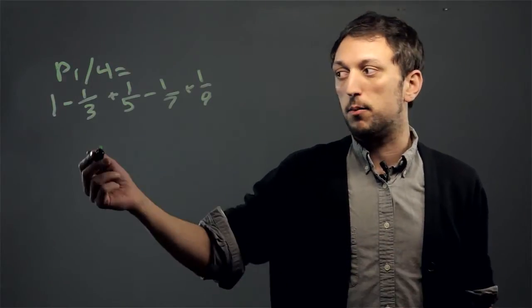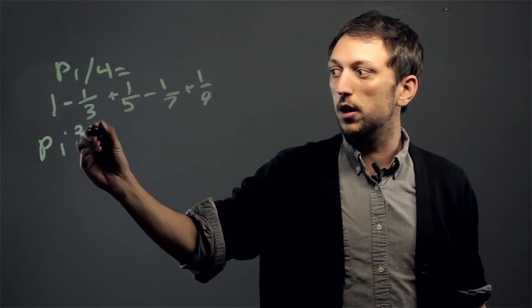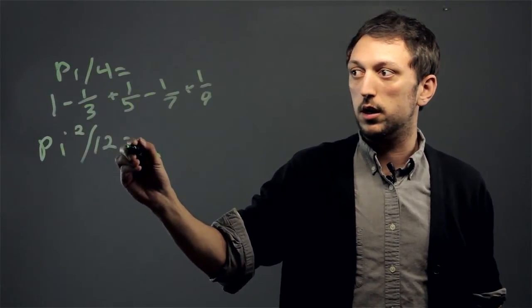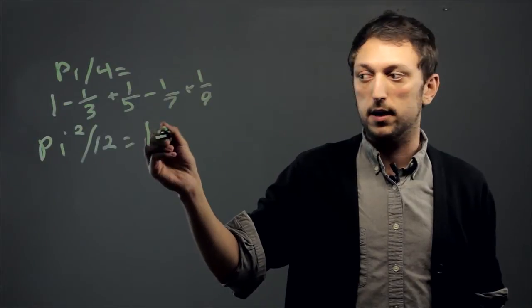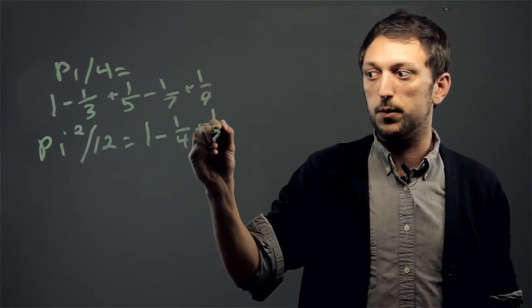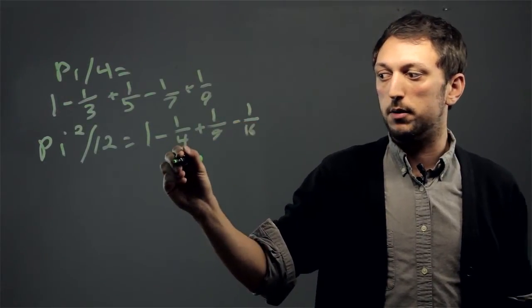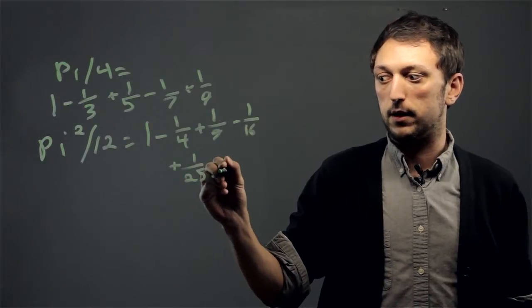A slightly more approximate, or at least faster, way is pi squared over 12 equals 1 minus 1 over 4 plus 1 over 9 minus 1 over 16 plus 1 over 25, etc.